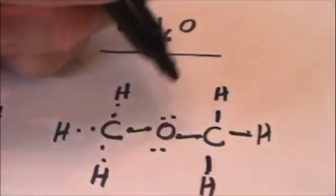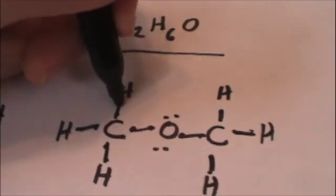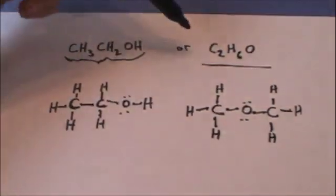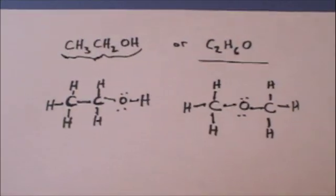around those carbons. And then we get an isomer, meaning two different compounds with the same C2H6O chemical formula.